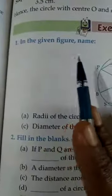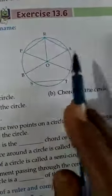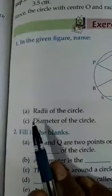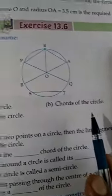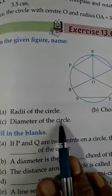Question number 1 of exercise 13.6: in the given figure, name - this is the figure - and you have to name A) radii of the circle, B) chords of the circle, and C) diameter of the circle.